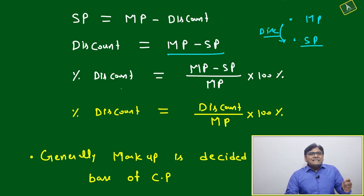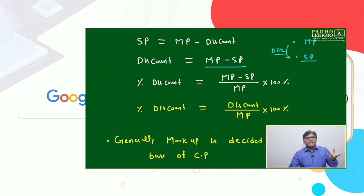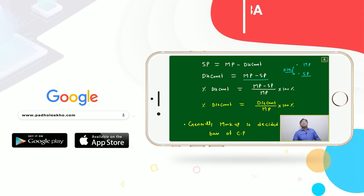Now percentage discount: the same discount whatever you got in rupees or in amount, marked price minus selling price, compared to marked price. Base will always be marked price times 100. Percentage discount, you can say, is discount divided by marked price times 100.